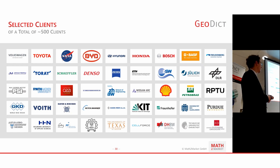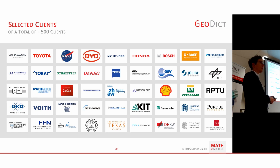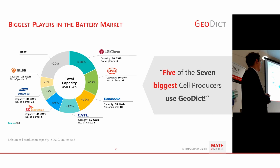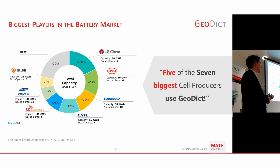GeoDict has customers from the automotive industry, cell manufacturers, and many academic users. Among the seven biggest battery cell producers worldwide in 2020, five are using GeoDict, demonstrating the recognized value of digital material design for faster development and improved batteries.